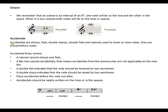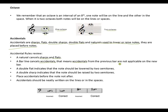Accidentals are sharps, flats, double sharps, double flats, and naturals used to lower or raise notes. A natural cancels the sharp or flat. A bar line cancels accidentals — that means accidentals from the previous bar are not applicable in the new bar. They no longer work in the new bar.